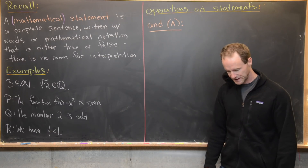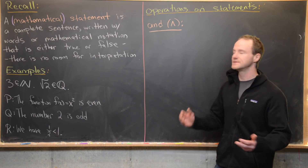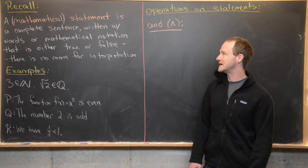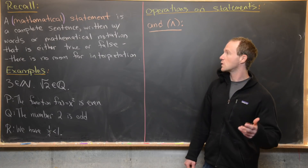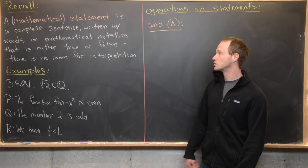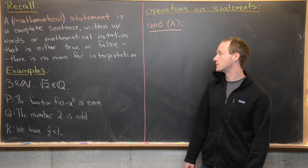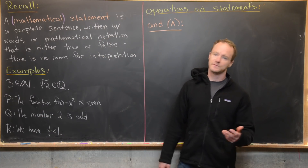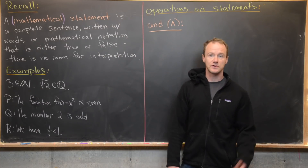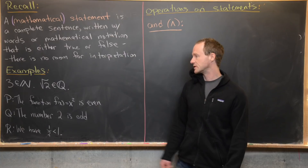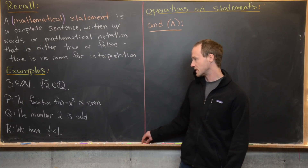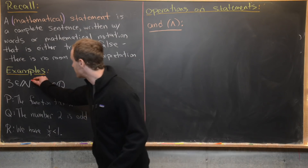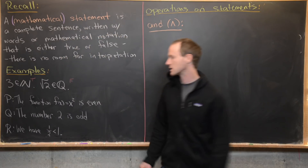Let's recall that in the last video we defined something called a mathematical statement. A mathematical statement is a complete sentence written with words or other mathematical notation that is either true or false — there's no room for interpretation. For example, 'three is a natural number' is true, while 'the square root of two is a rational number' is false.